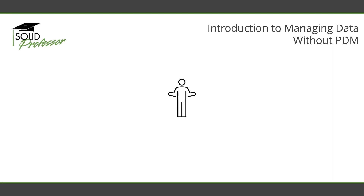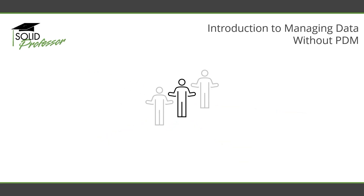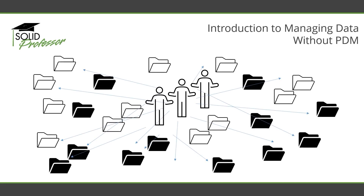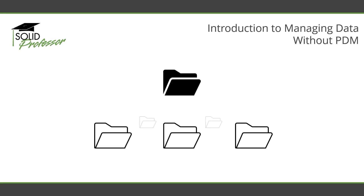A single employee can create tons of different types of files over the course of a short period. And without setting up a proper data management system, the data can become cluttered and impact your team's ability to work and collaborate efficiently. Therefore, having a data management system with a set file structure to find information is key, as many files rely on the reference of other files. We all know how frustrating a broken reference or a missing file can be.